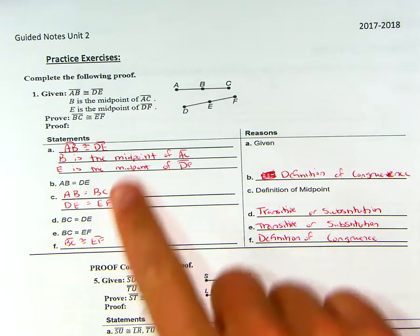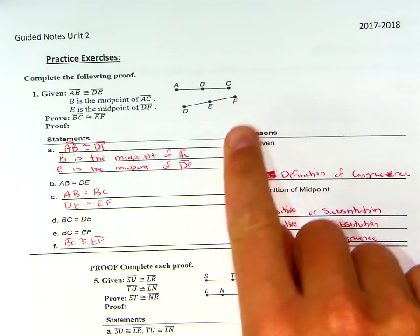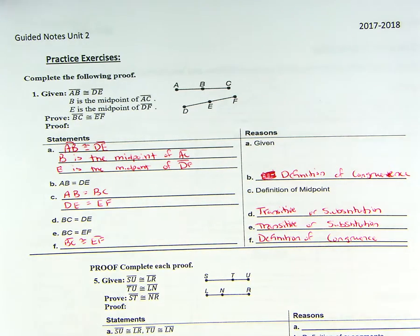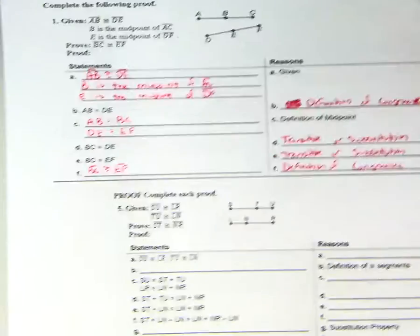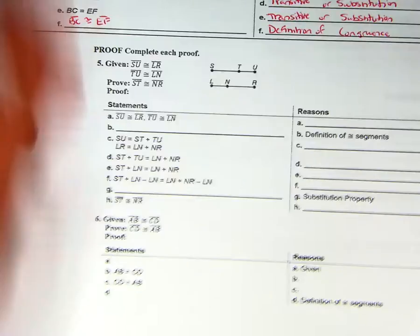So we have the givens right here. That tells us we need to use the givens, definition of congruence—really it's just going from the congruence symbol to equal sign—and then the idea that we can either use the transitive property to get to here or substitution. I want to talk about this proof and then you can go on to do the 2-7 worksheet.